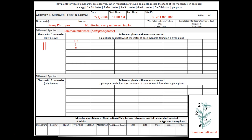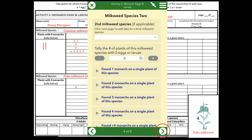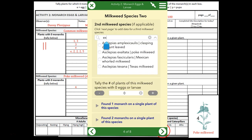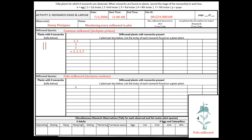Here's a common milkweed with three second instars, a fifth instar, and an egg — we go to the next box and write E, 2, 2, 2, and 5 to record every single egg and larva found on this single plant. Now we come across a new species: poke milkweed with a fourth instar. We drop down to the bottom section and write poke milkweed next to the milkweed species heading, then go to the first box and write four for one fourth instar. In Survey123, you tap the bottom right corner arrow to move to your second milkweed species and use the drop-down menu to select the appropriate species and record the instars or eggs seen.